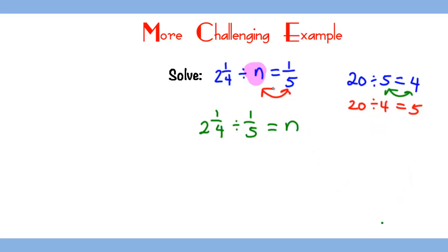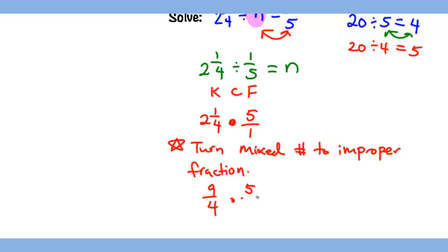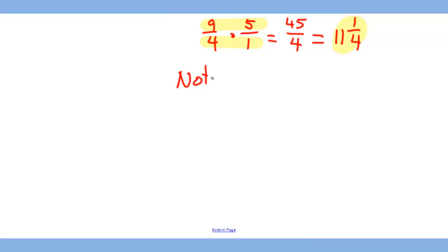We have a straightforward question to solve where we will use keep, change, and flip again, which gives us 2 1/4 times 5/1, which is the reciprocal of 1/5. To solve this, we turn the mixed number into an improper fraction, giving us 9/4 times 5/1. Multiplying the numerators gives us 45, and multiplying the denominators gives us 4, and simplifying this gives us 11 and 1/4 as the final answer.